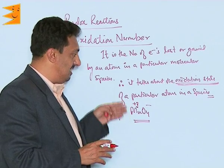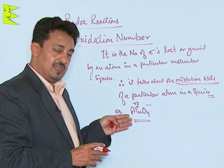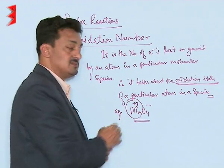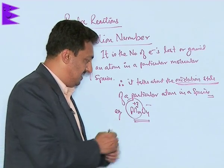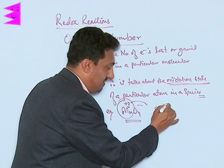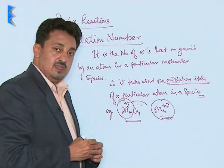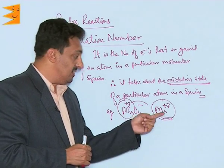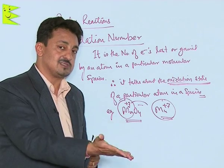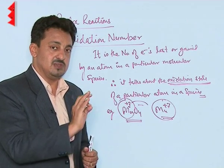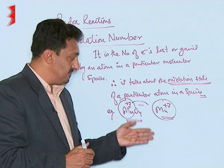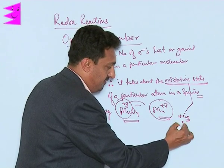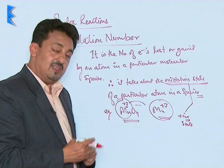You will understand this more clearly when we go through the rules with individual examples. What is important to notice is that manganese here is losing seven electrons, so it is present in its plus seven state. This particular state in which it is existing is called its oxidation state, and for reaching this state it has lost seven electrons — so seven is called its oxidation number. The oxidation state can be a positive state or a negative state.